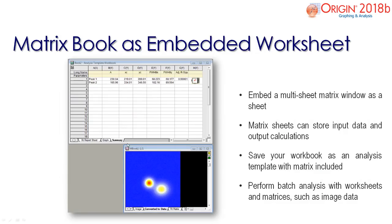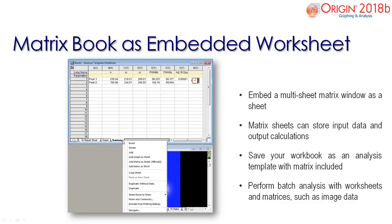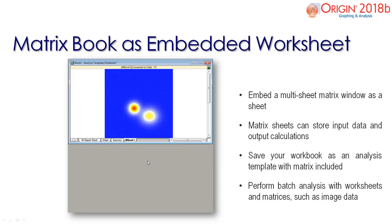New to Origin 2018B is the capability to add a multi-sheet matrix book as a sheet in your workbook. The benefit of this is that you can save your workbook as an analysis template with the matrix, allowing you to conduct batch processing on matrix sheets and worksheets.